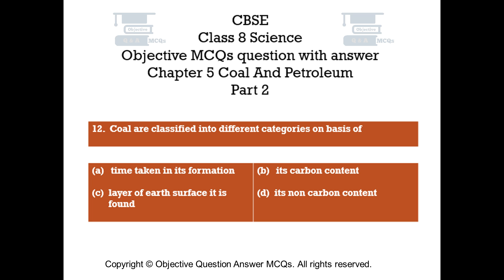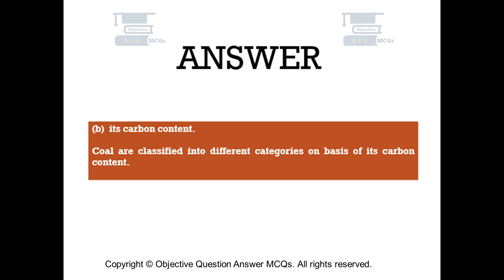Question number 12: Coal is classified into different categories on the basis of — Option A: Time taken in its formation. Option B: Its carbon content. Option C: Layer of earth surface it is found. Option D: Its non-carbon content. The right answer is Option B: Its carbon content. Coal is classified into different categories on the basis of its carbon content.